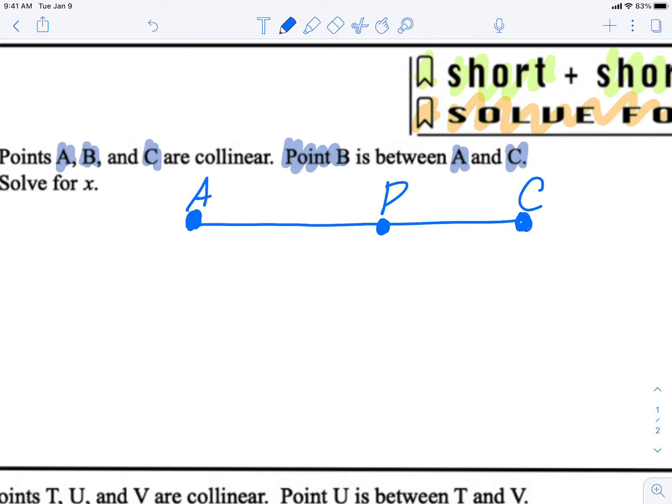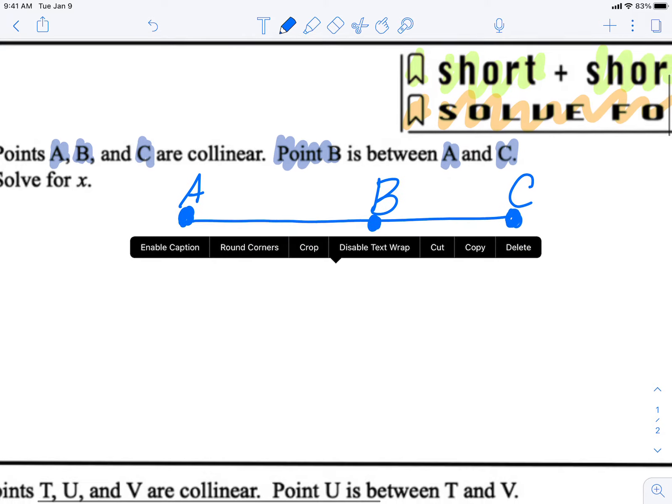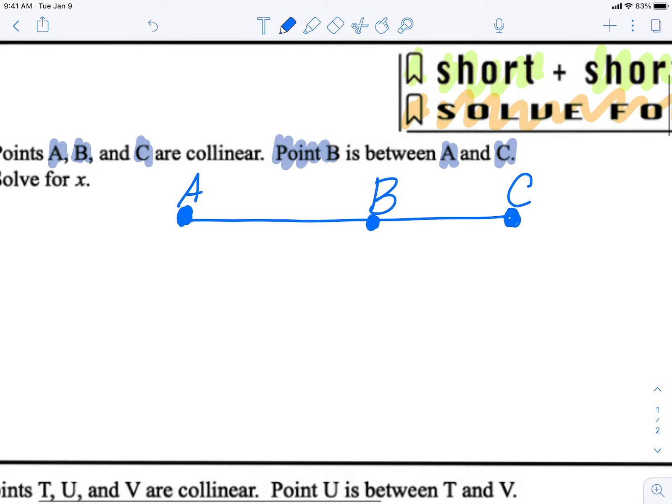So we write out our setup. We know it's short plus short equals long, so AB is the first short, plus BC is the second short, is equal to AC which is the long segment.